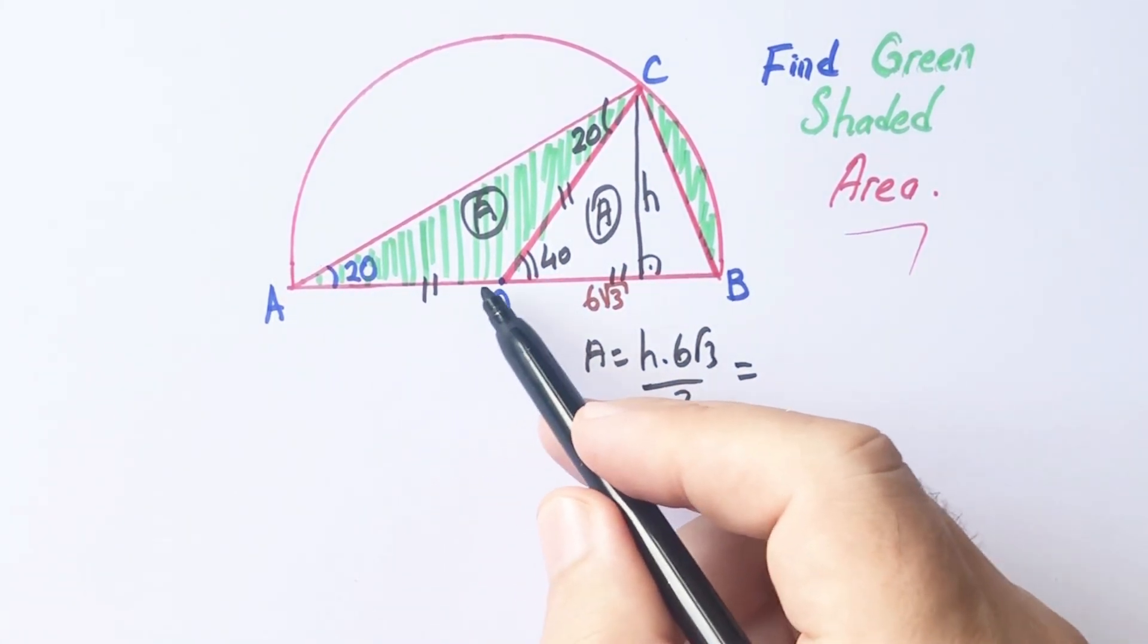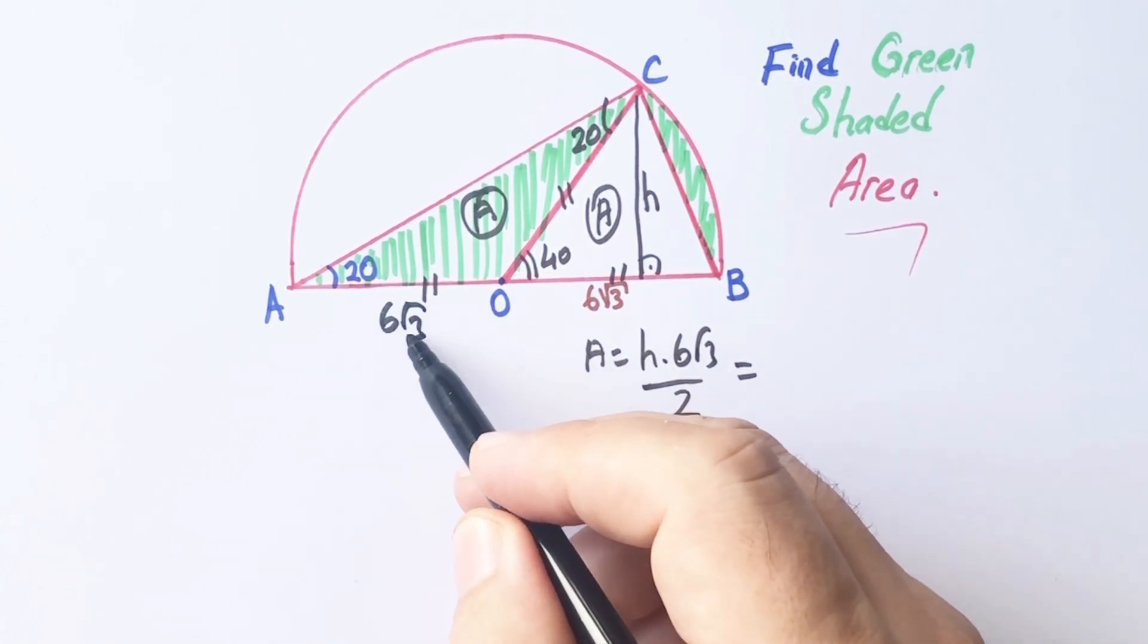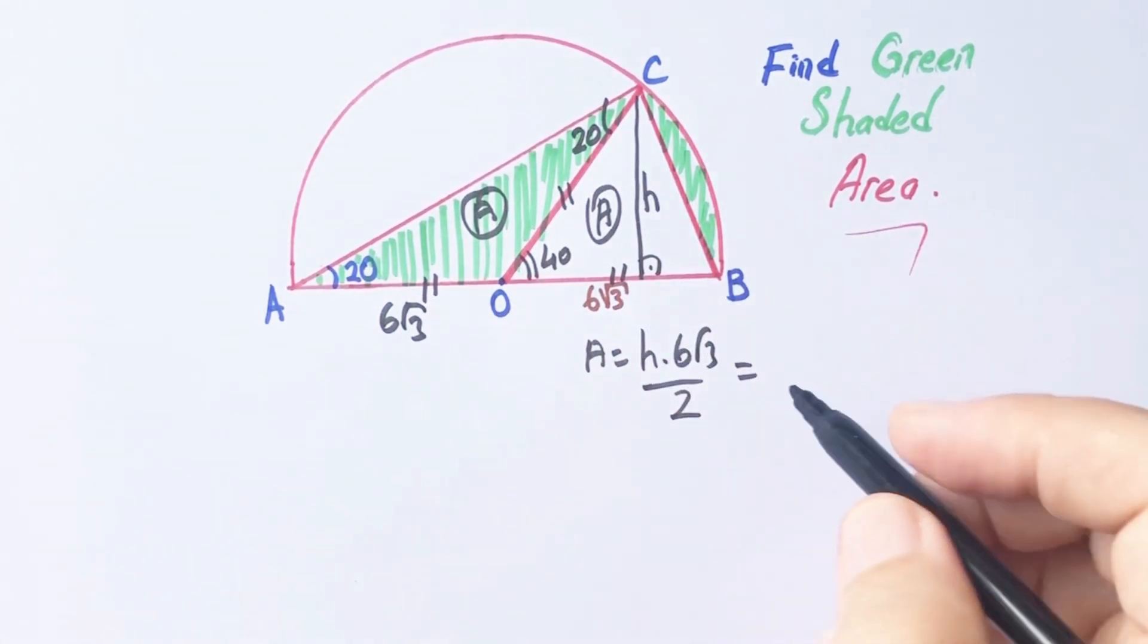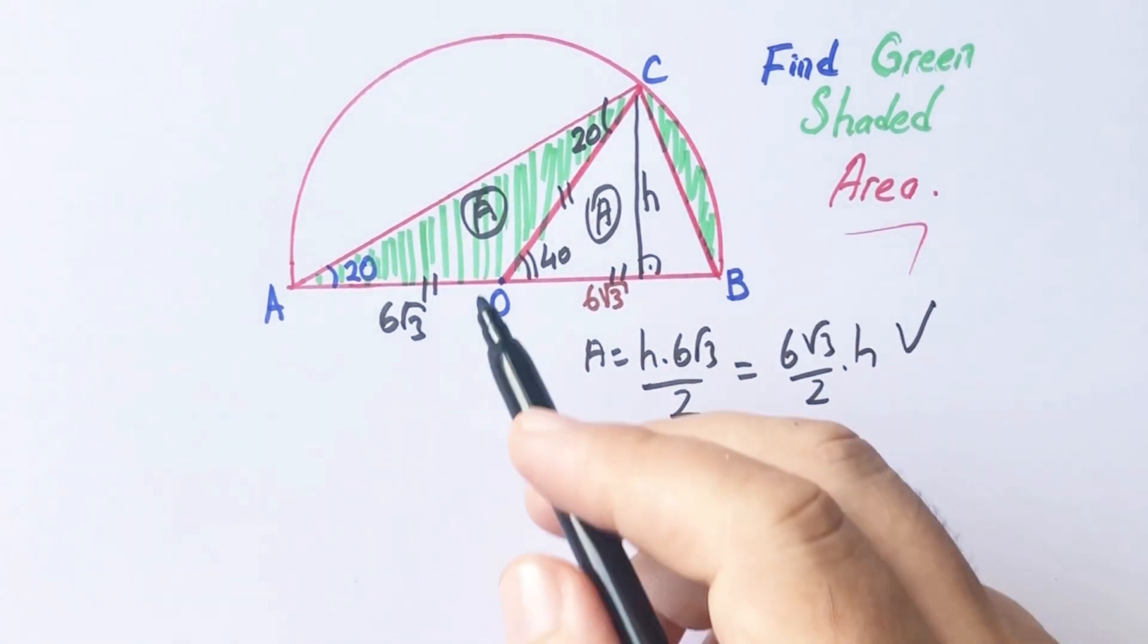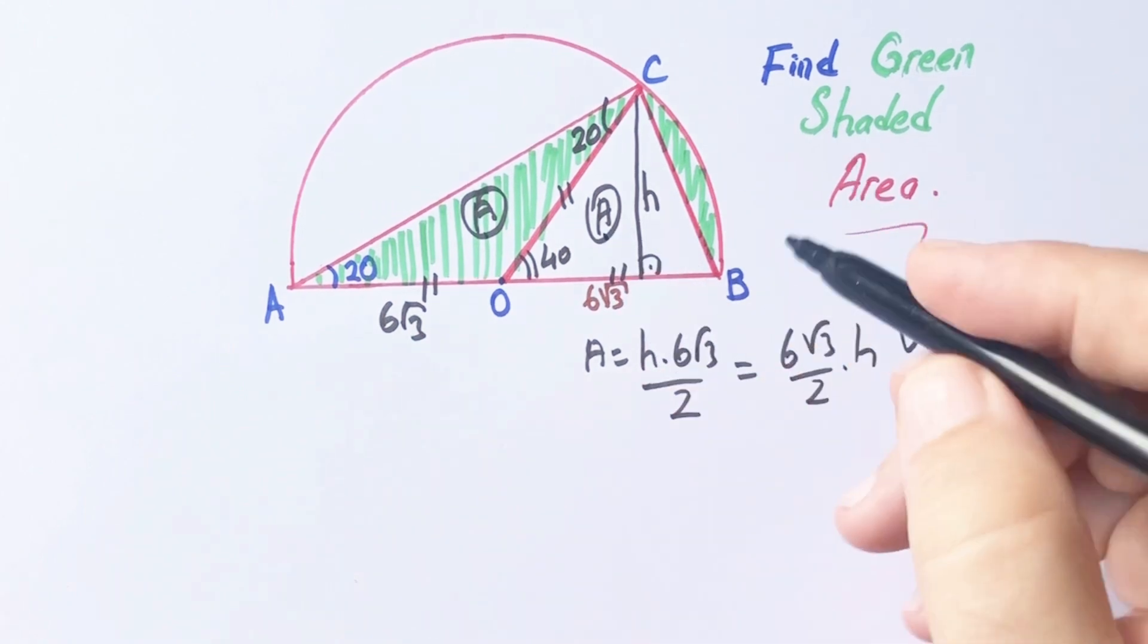The area of triangle ACO equals 6 root 3 over 2 times H. Therefore, these two areas must be equal.